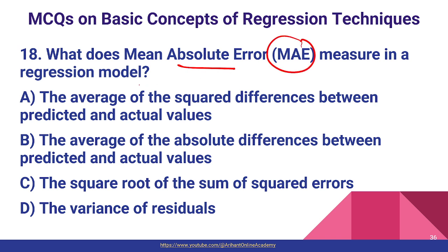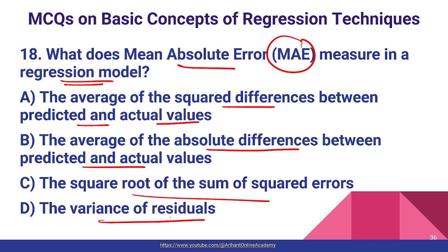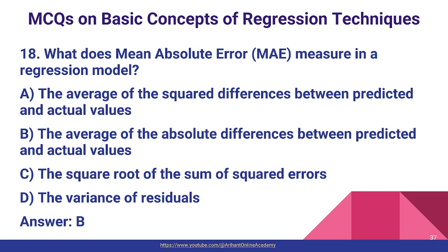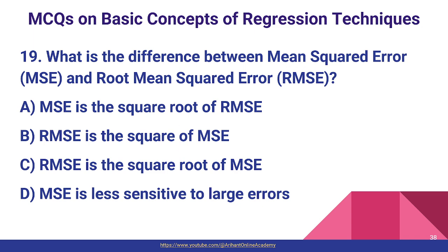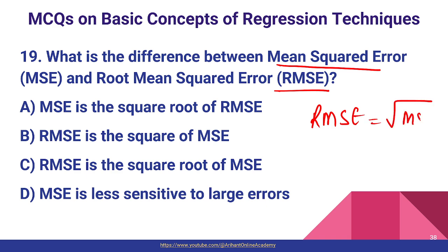Question number eighteen: what does Mean Absolute Error (MAE) measure in a regression model? MAE measures the average of absolute differences between predicted and actual values — 'A' stands for absolute — so option B is the correct answer. Question number nineteen: what is the difference between Mean Squared Error (MSE) and Root Mean Squared Error (RMSE)? RMSE is the square root of MSE, so option C is the correct answer.